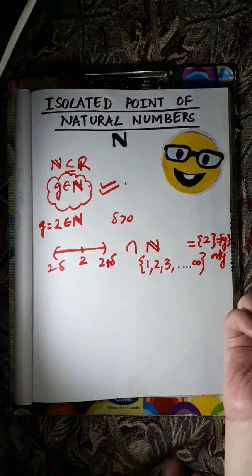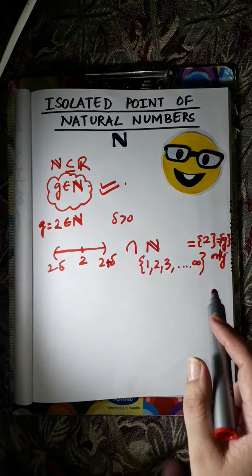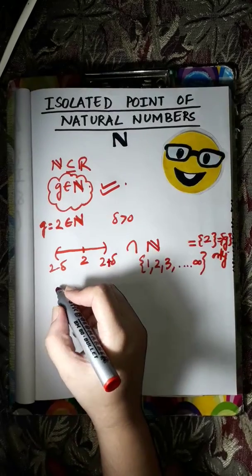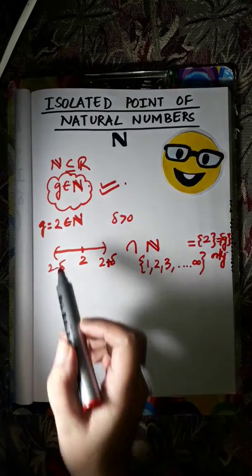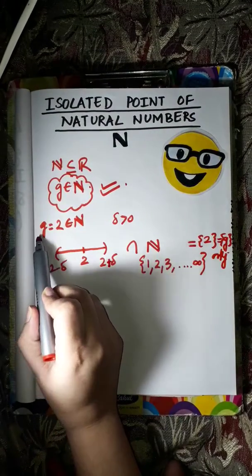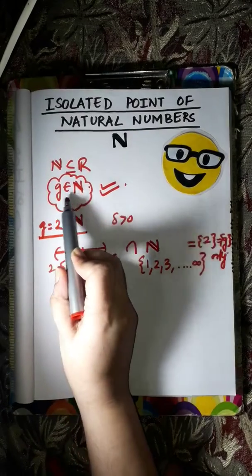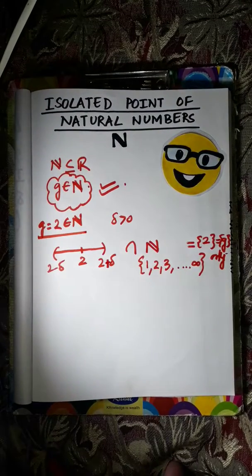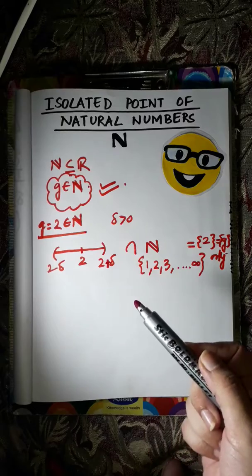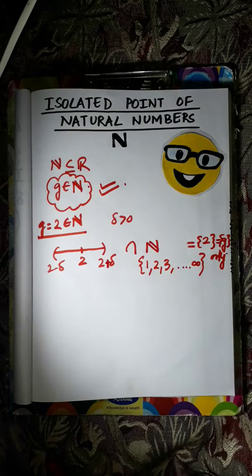So this implies that this is the isolated point. If we see, then we will find out that for any G belongs to N, we get that they will be the isolated points for natural numbers.